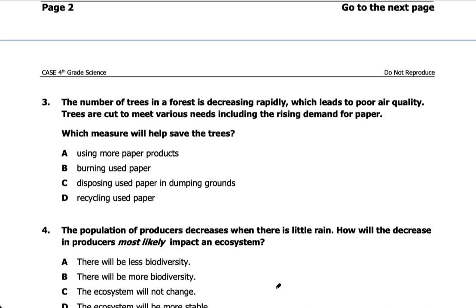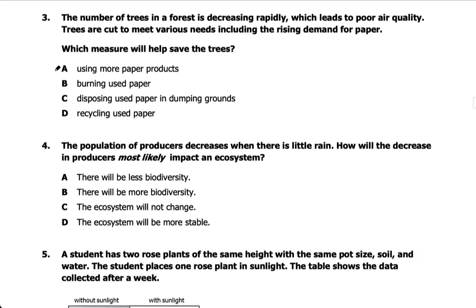Number three: the number of trees in a forest is decreasing rapidly, leading to poor air quality. Trees are cut to meet various needs including rising demand for paper. Which measure will help save trees? Using more paper products would use more trees, and burning used paper would cause black smoke and worsen air quality. Disposing used paper in dumping grounds won't help either. Recycling used paper is the answer, because that means cutting down fewer trees, and more trees means better air quality.